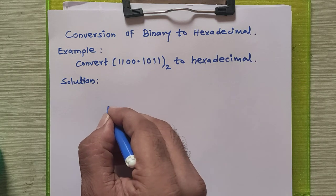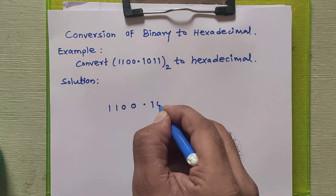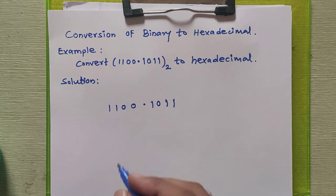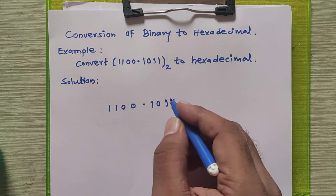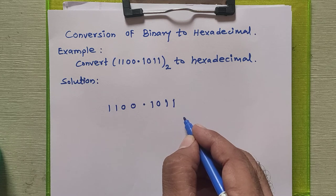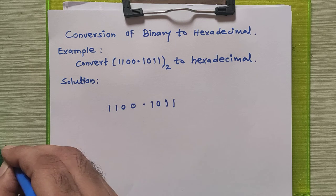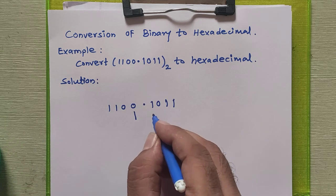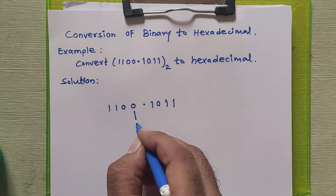First of all, we'll copy the given number as it is into the solution. We need to form a group of four binary bits and write the hexadecimal equivalent for that particular group to obtain our hexadecimal number. For the integral part, we form the group from right to left, whereas for the fractional part, we form the group from left to right.